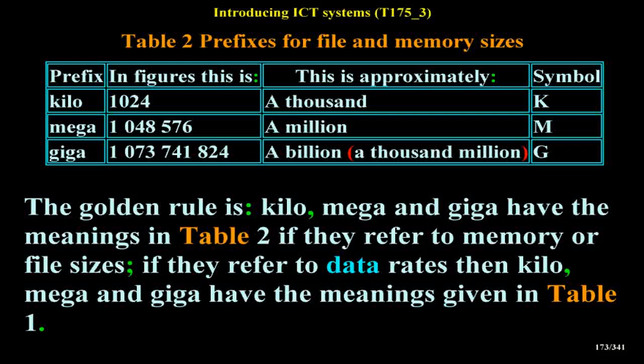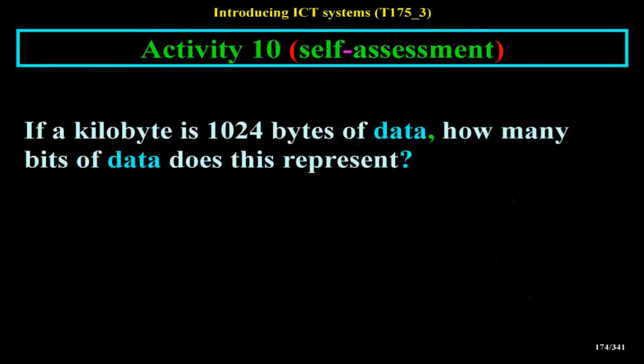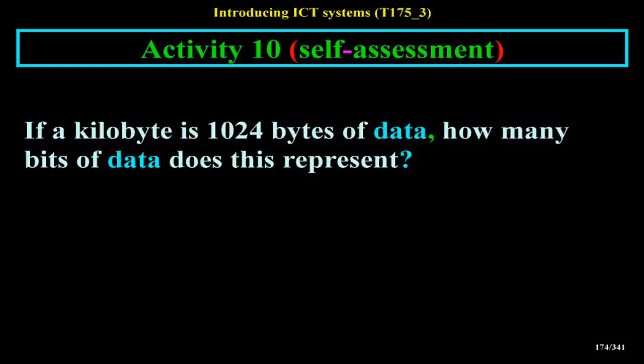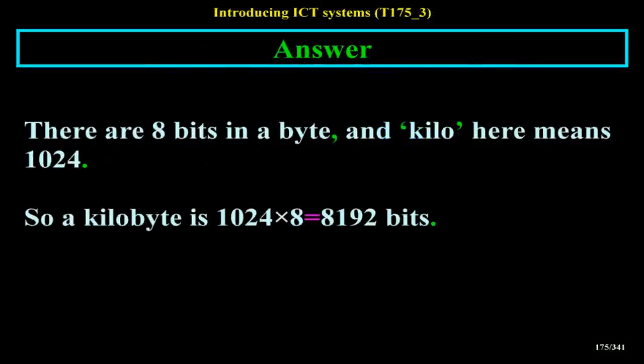The golden rule is: kilo, mega and giga have the meanings in Table 2 if they refer to memory or file sizes. If they refer to data rates, then kilo, mega and giga have the meanings given in Table 1. Activity 10 Self-Assessment: If a kilobyte is 1,024 bytes of data, how many bits does this represent? Answer: there are 8 bits in a byte, and kilo here means 1,024, so a kilobyte is 1,024 × 8 = 8,192 bits.